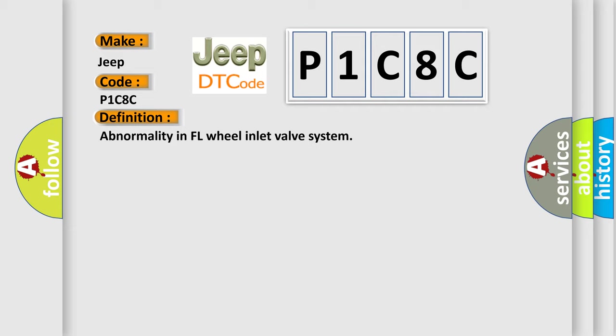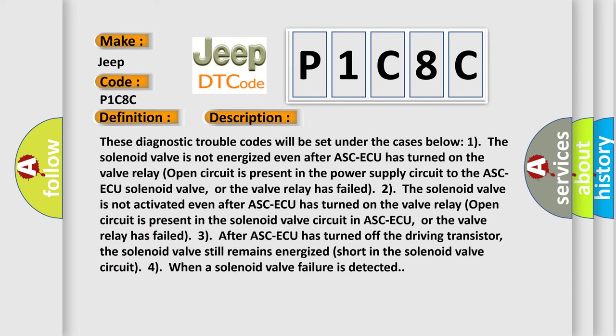Here is a short description of this DTC code. These diagnostic trouble codes will be set under the following cases. Case 1: The solenoid valve is not energized even after ASCAQ has turned on — a valve relay open circuit is present in the power supply circuit to the ASCAQ solenoid valve, or the valve relay has failed. Case 3: After ASCAQ has turned off the driving transistor, the solenoid valve still remains energized — a short in the solenoid valve circuit. This diagnostic error occurs most often in these cases.